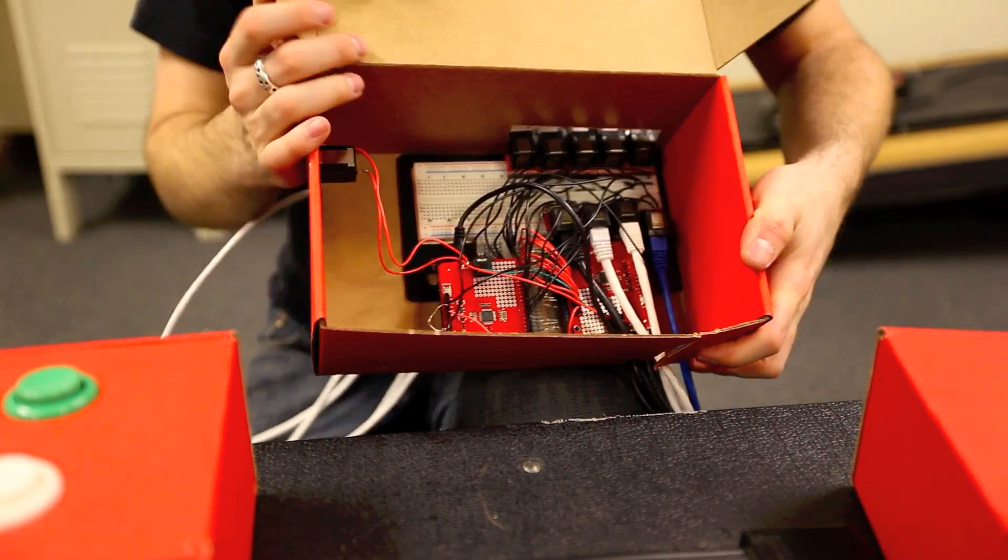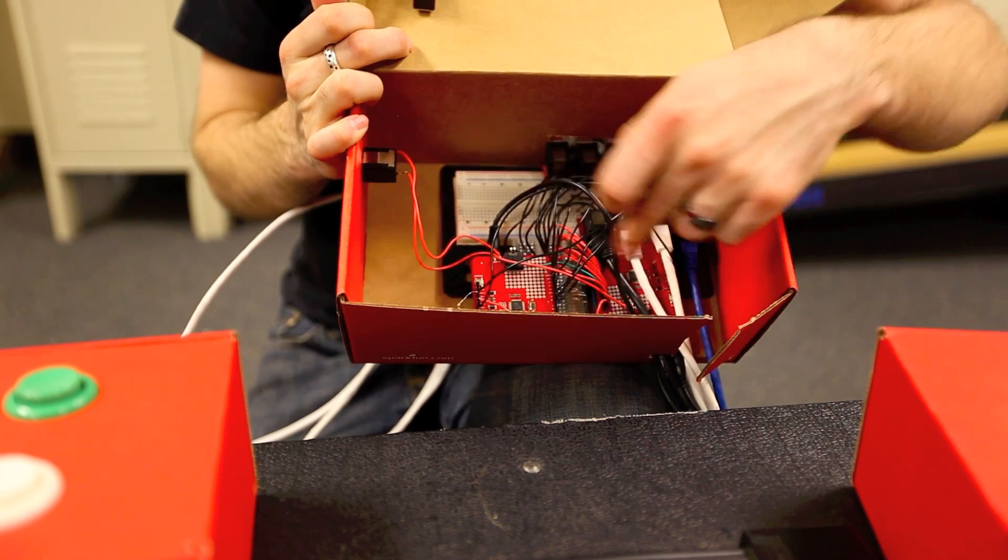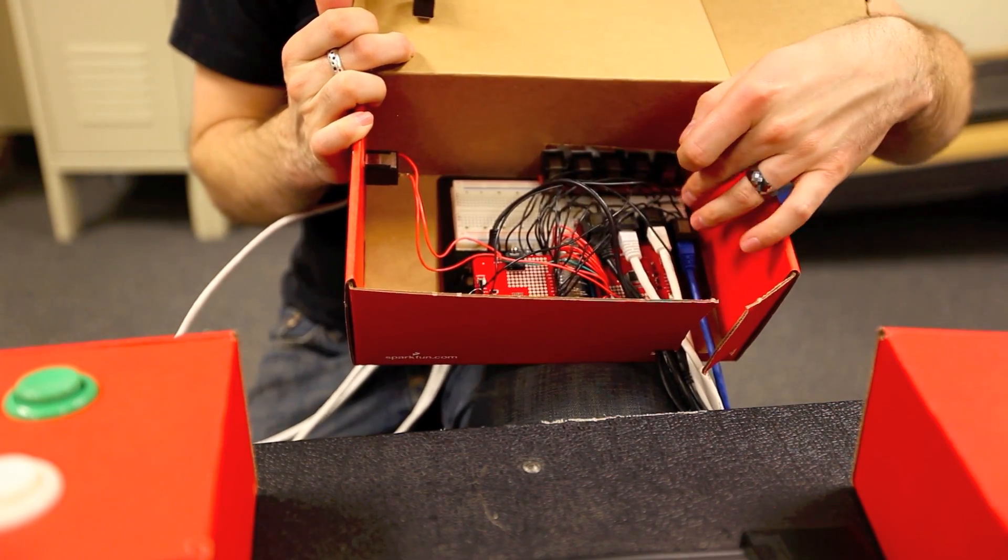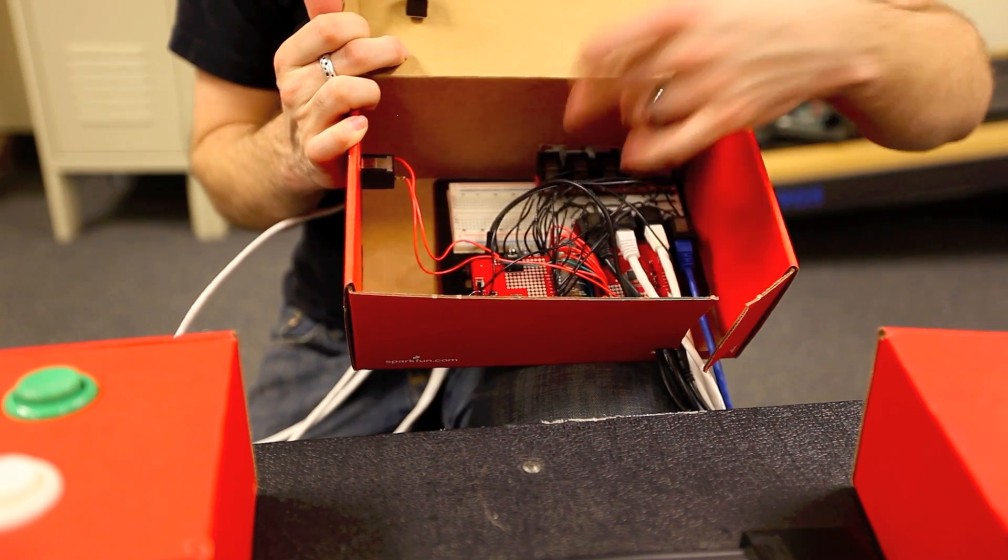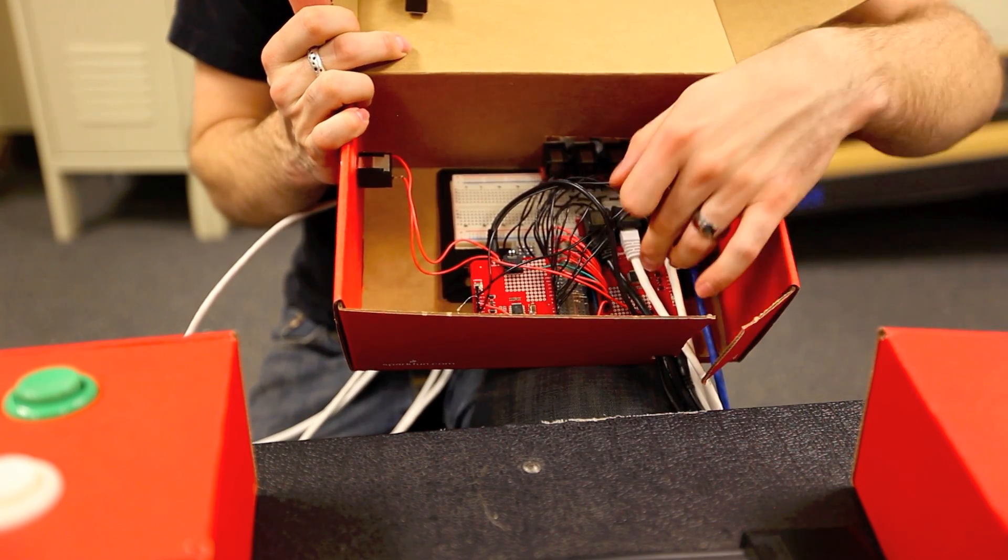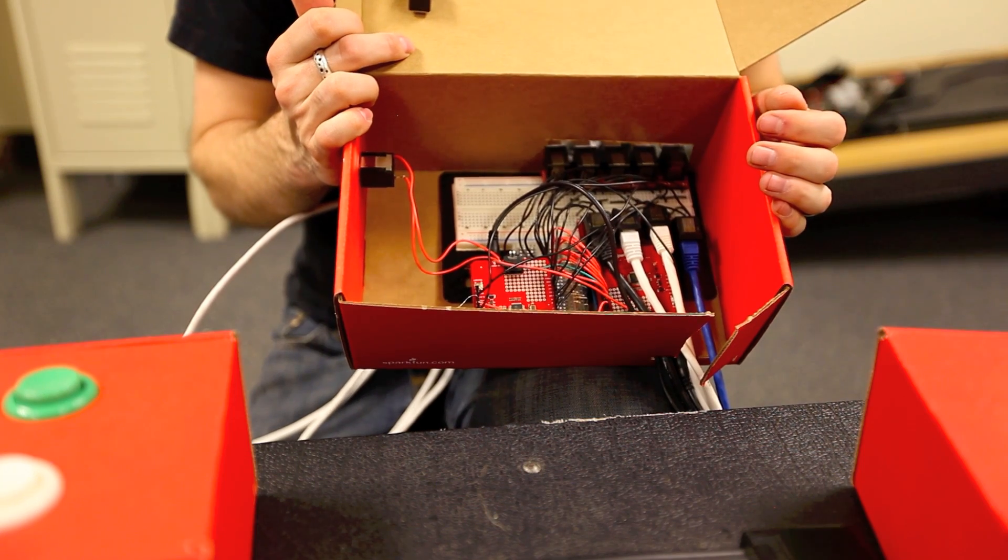So if we open this up, we can see that we've got two of the Musical Instrument Shields hooked up to a breadboard and then broken out to each one of our RJ45 breakouts. And underneath each one of these we've got an Arduino.